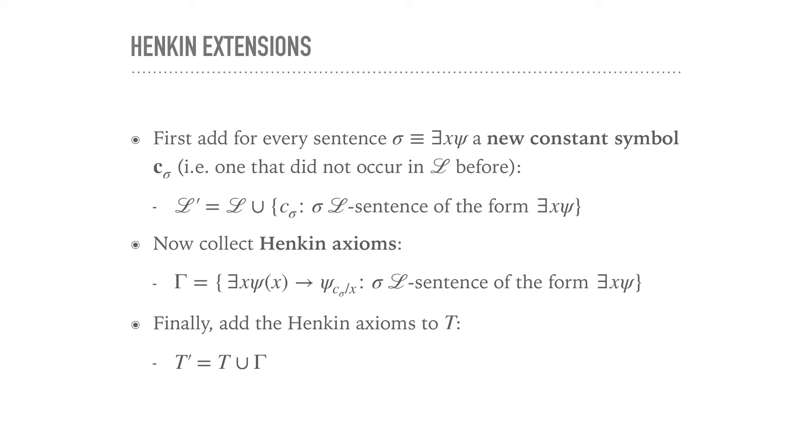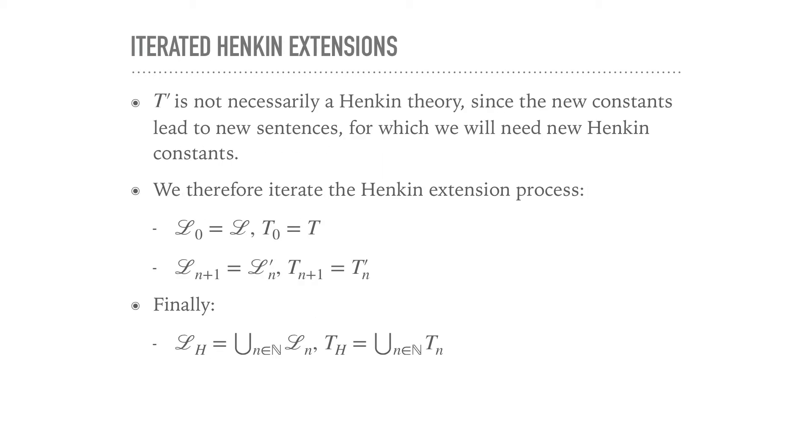One might be tempted to think now that we're done, but the problem is that since we add new symbols here and we add then new formulas there, we can use these symbols to actually form new formulas of this form, new existential sentences, which would then necessitate new constant symbols in turn. So, as we observed, T' is not necessarily a Henkin theory, since the new constants lead to new sentences, for which we will need new Henkin constants.